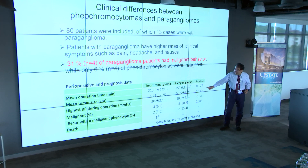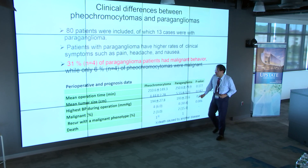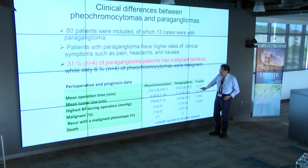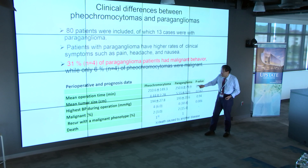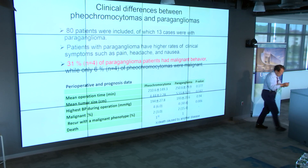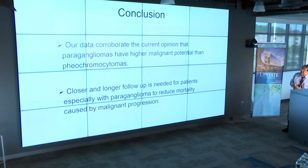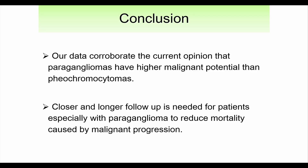Operative time showed no significant difference, and tumor size and blood pressure were also similar. However, malignant rate is higher in paragangliomas. Our data corroborate the current opinion that paragangliomas have higher malignant potential than pheochromocytomas. Closer and longer follow-up is needed for patients, especially with paragangliomas, to reduce mortality caused by malignant progression.